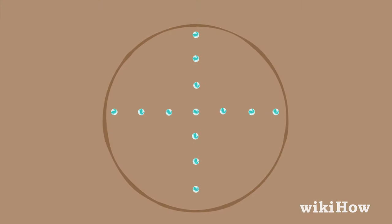Place 13 marbles in a cross shape at the center of the circle. These are the MIBs for the game.